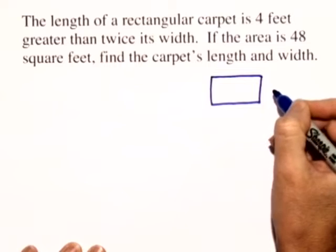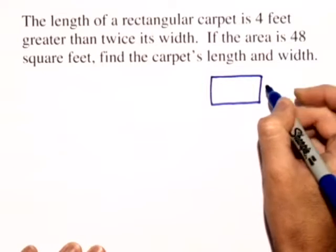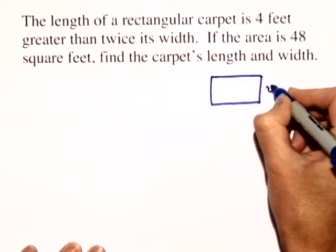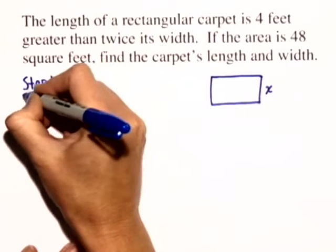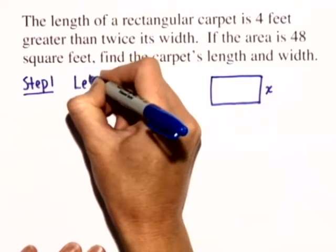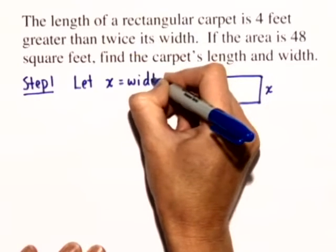We don't know anything about the width, but we do know something about the length. So let's call the width x. In step 1, we'll let x equal the width of this rectangle.